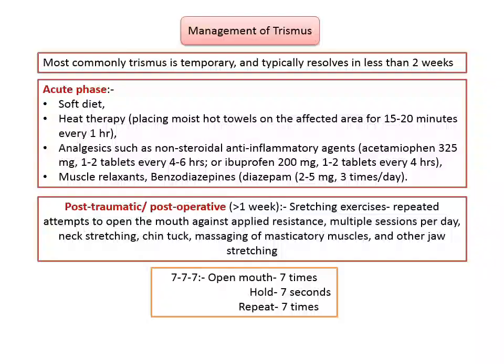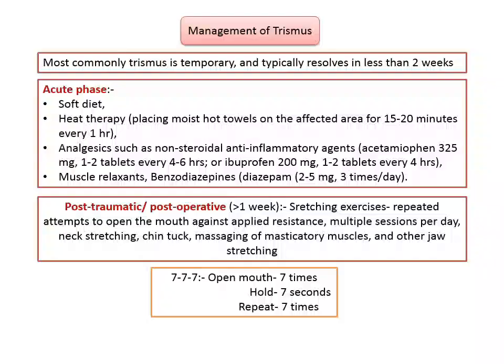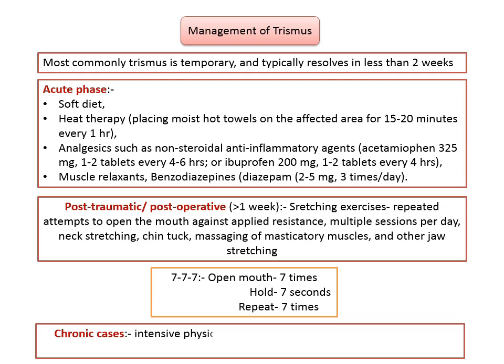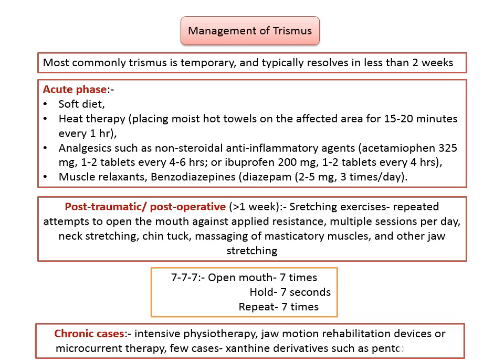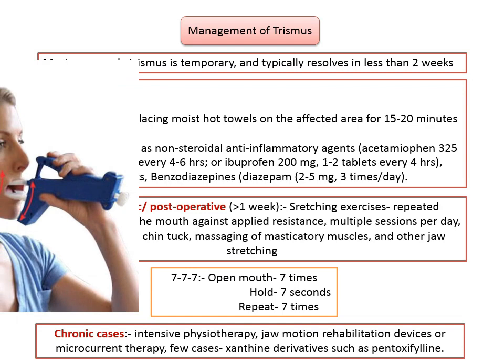Trismus may become chronic in the setting of fibrosis or ongoing radiotherapy. These cases may benefit from intensive physiotherapy, sometimes utilizing commercially available jaw motion rehabilitation devices or microcurrent therapy, particularly in cases refractory to more conservative approaches. Some authors have also described treatment with xanthine derivatives such as pentoxifylline. An example of a device which allows for the use of passive motion is the TheraBite jaw motion rehabilitation system.